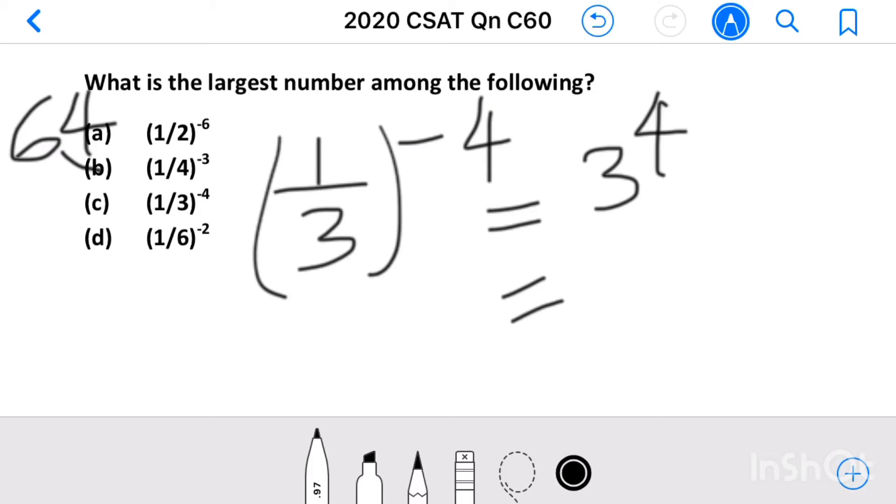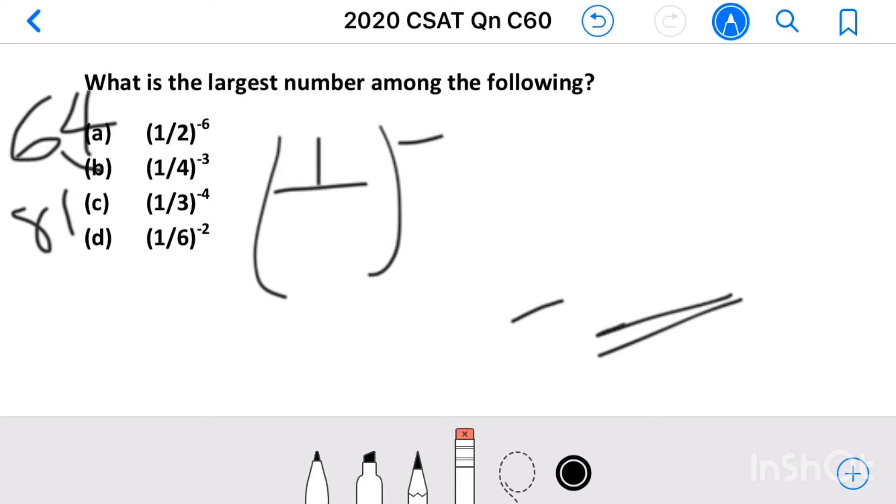This becomes 81. So c equals 81. And finally, 1 by 6 power minus 2.